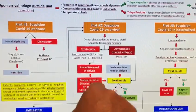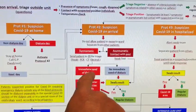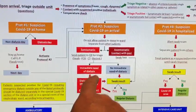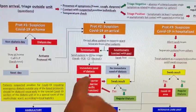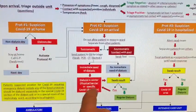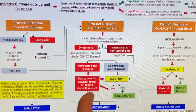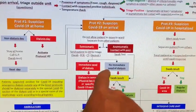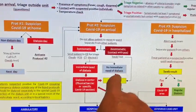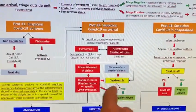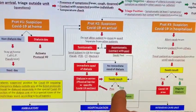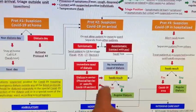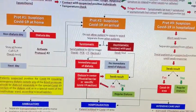Electrolytes are checked. If the patient is in immediate need of dialysis, they go into the dialysis center with a physical barrier or specific section. If there is no immediate need of dialysis, we wait for swab results and depending on those results, we proceed with specific treatment.